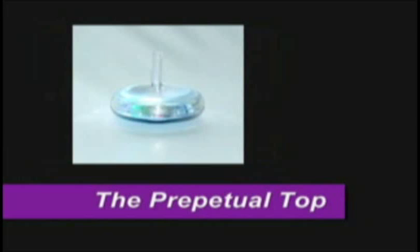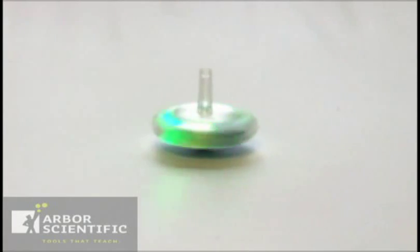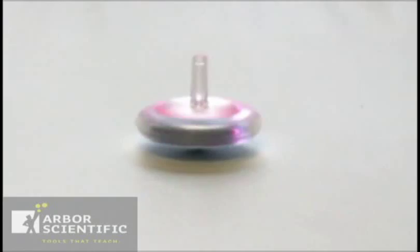The perpetual top—this top, once spun, will run for a long time. But how does it work? Interesting question. Since rotational energy can't just come out of nowhere, you'll need to look deep inside the perpetual top to find the secret.